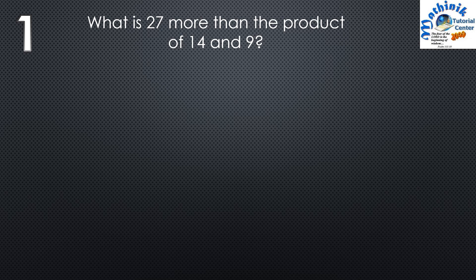Number 1: What is 27 more than the product of 14 and 9? We're looking for a number compared to the product of 14 and 9, and it is 27 more than that product. In mathematical expression: 14 times 9 plus 27. 14 times 9 is 126, plus 27, so the answer is 153.